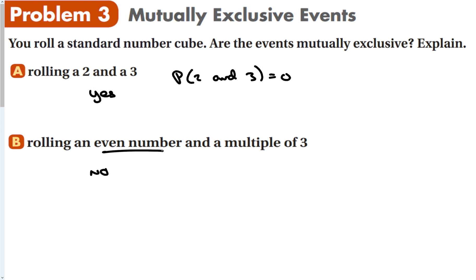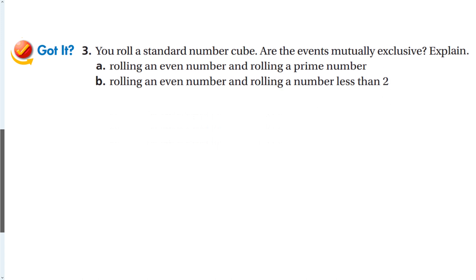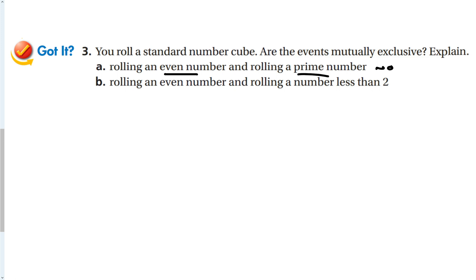However, you can roll an even number and a multiple of 3 — that would be 6, which is both even and a multiple of 3. So those two events are not mutually exclusive. Similarly, rolling an even number and a prime number are not mutually exclusive, because 2 is an even prime number. But rolling an even number and a number less than 2 — that is mutually exclusive, because there is no even number less than 2. So decide whether the two things you're trying to do can happen at the same time.